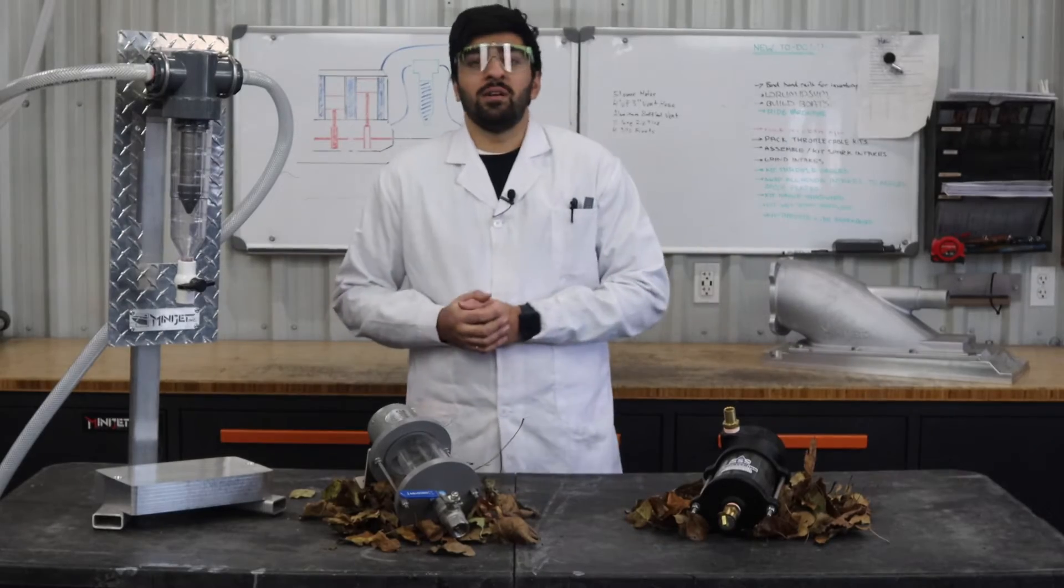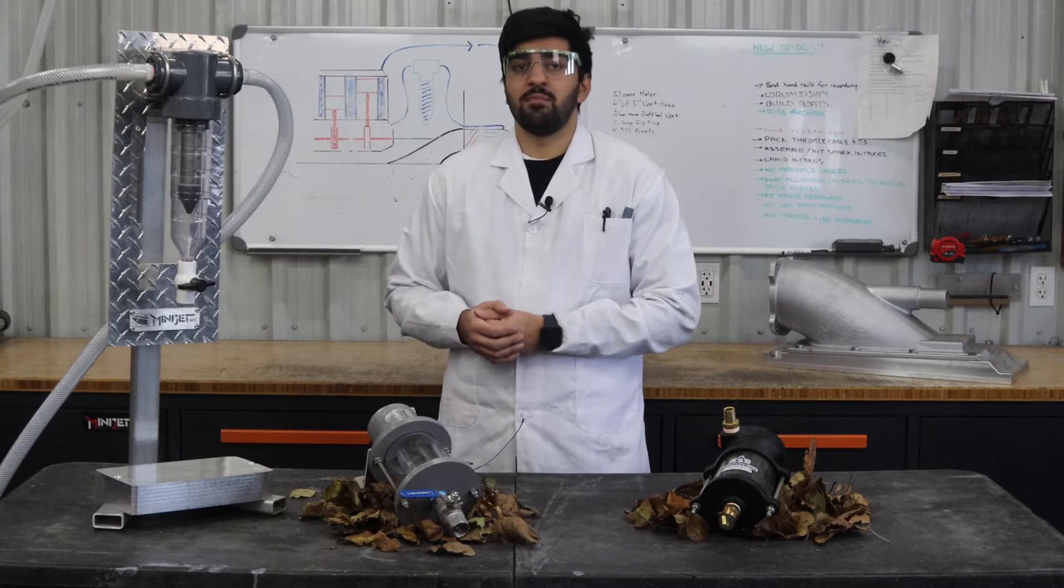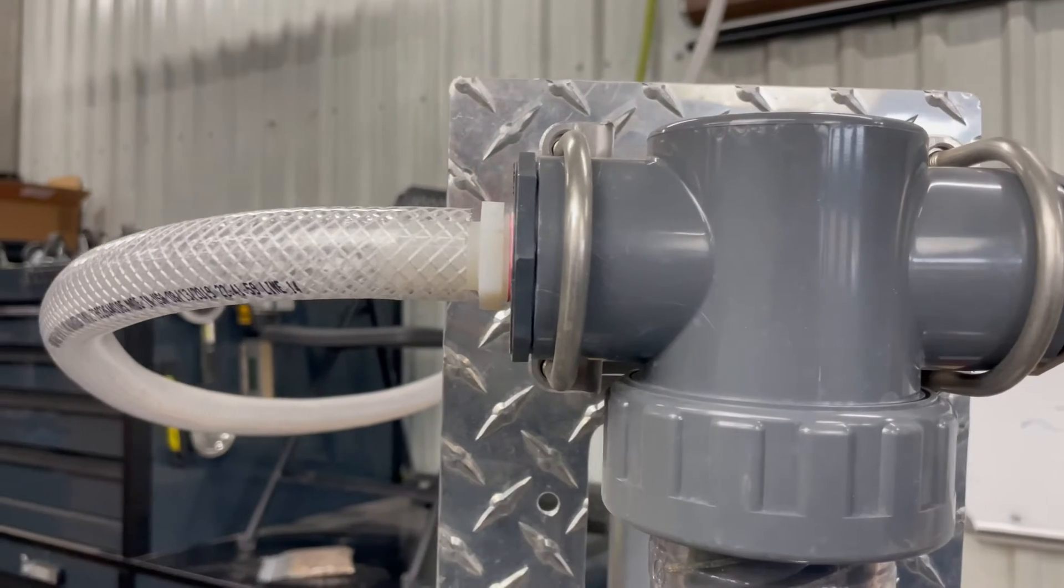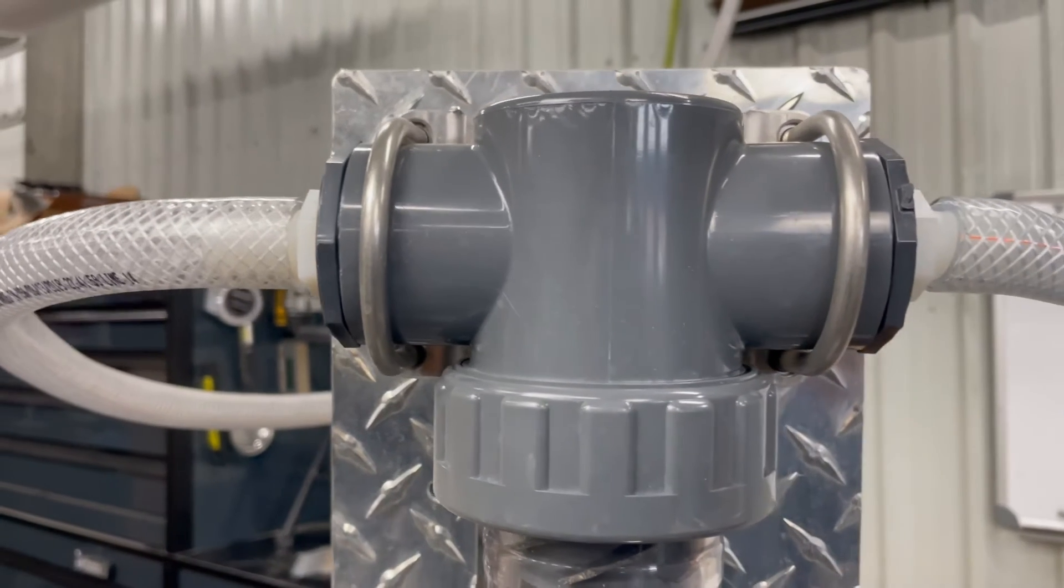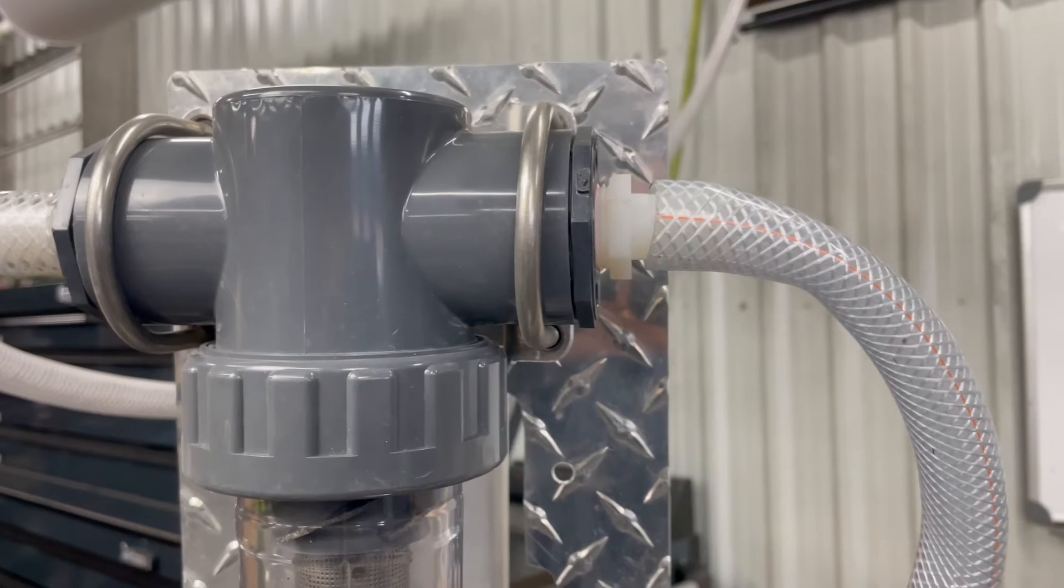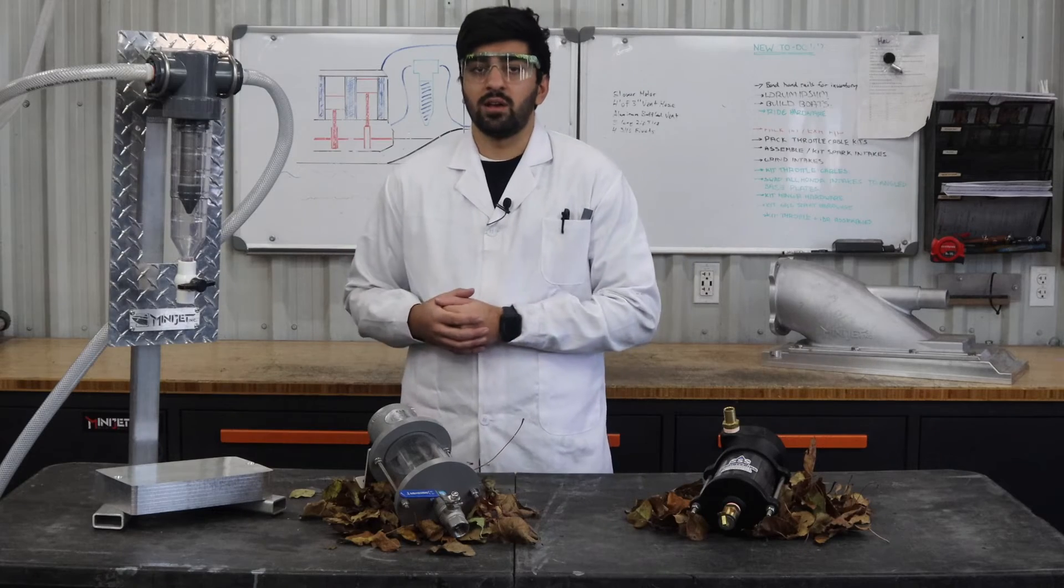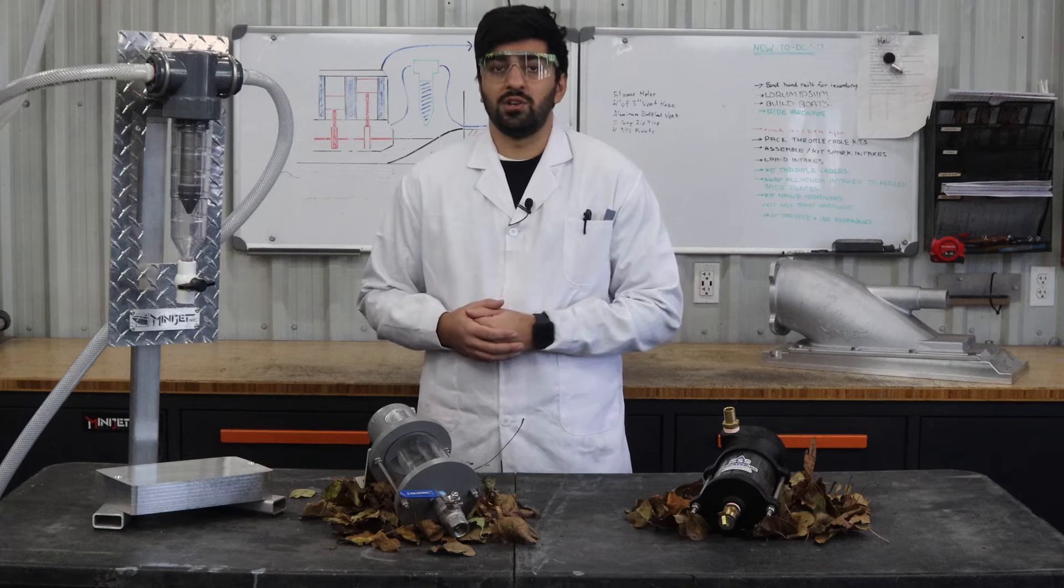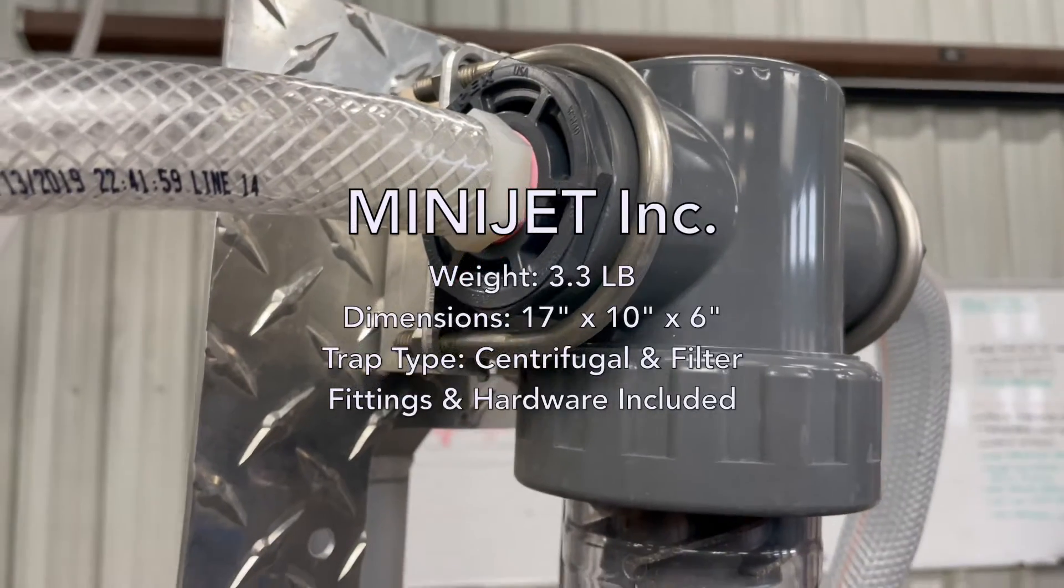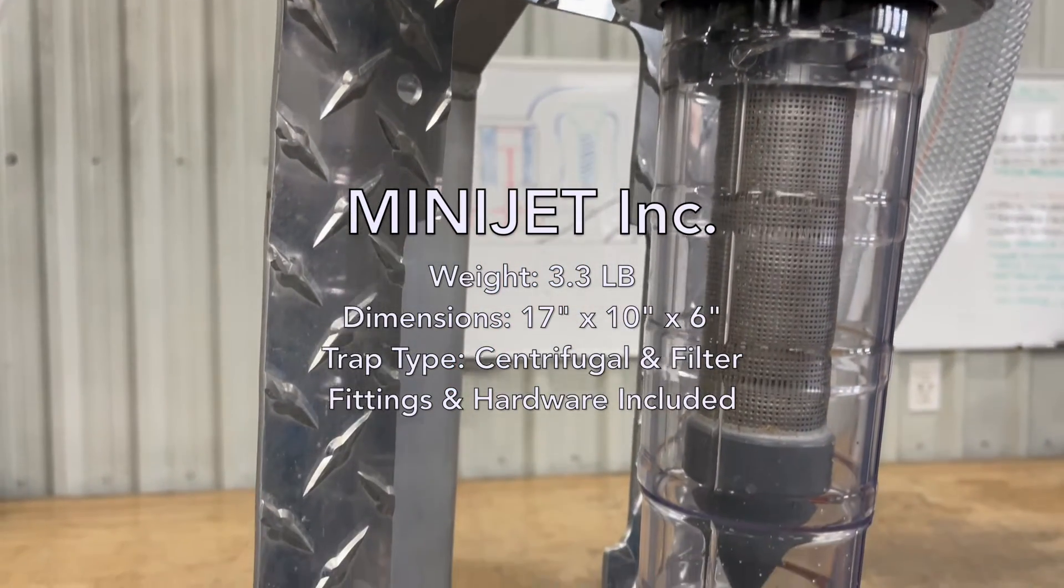Finally, we have the Mini Jet sand trap. This kit is pretty comprehensive and includes all the fittings and mounting hardware that you'll need. We offer this kit in your choice of three-quarter, five-eighths, or half-inch inlet and outlet fittings to suit different cooling lines. With this kit, we also supply a raw aluminum mounting bracket which you can either bolt or weld into your hull. This unit is by far the lightest at 3.3 pounds and is fairly compact with dimensions of 17 by 10 by 6 inches.